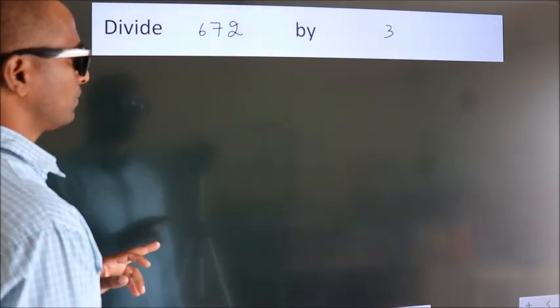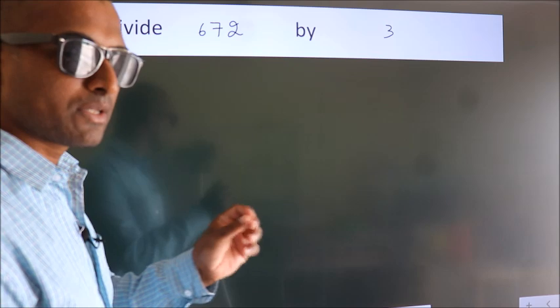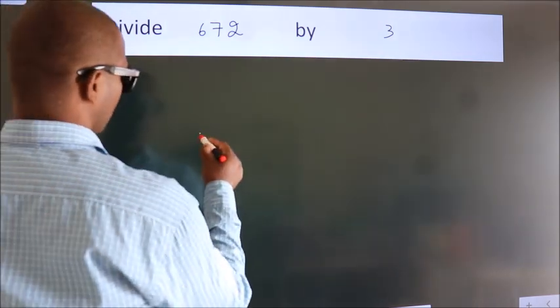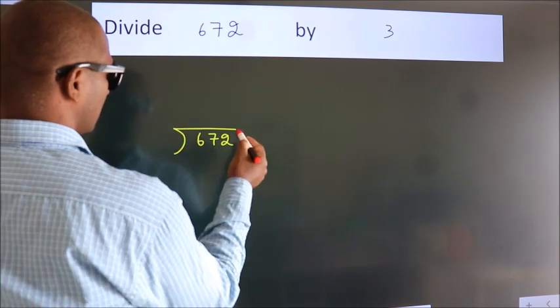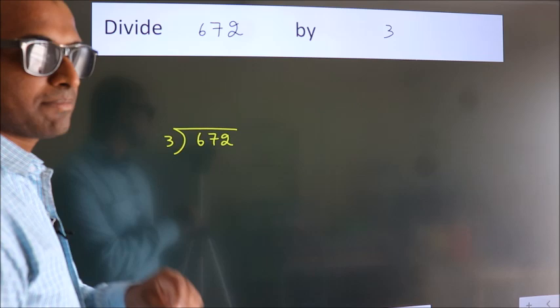Divide 672 by 3. To do this division, we should frame it in this way. 672 here, 3 here. This is your step 1.